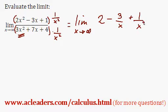All over 3. 3x squared times 1 over x squared is just 3, 7x times 1 over x squared is just 7 over x, and finally 4 times 1 over x squared is 4 over x squared.